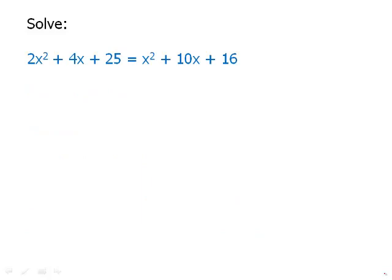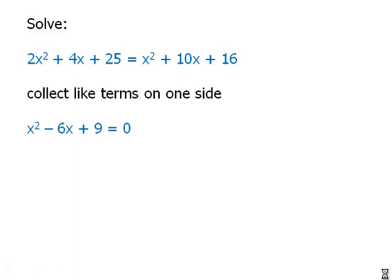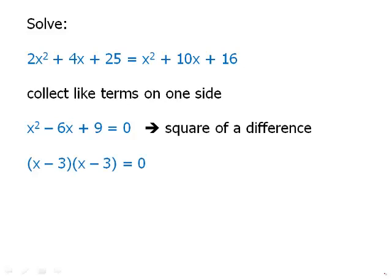Suppose we have this. Now, we have a quadratic equaling a quadratic. Looks very tricky. And of course, the test loves to throw stuff like this at you. But all you have to do is just get everything on one side. So we're going to subtract the x squared, subtract the 10x and subtract the 16. And this will get us down to x squared minus 6x plus 9 equals zero. And notice that's a special pattern. That is the square of a difference. So we can write that immediately as x minus 3 times x minus 3. It means that our only possibility for getting zero is if x minus 3 equals zero, or in other words, if x equals 3. So this is an example of a quadratic that has one solution instead of 2.